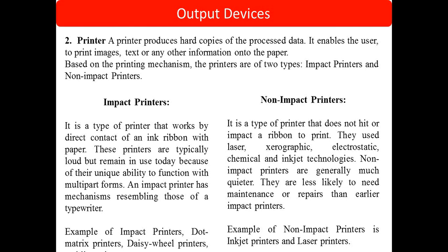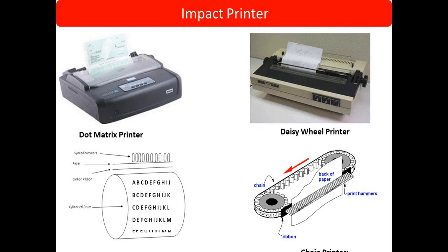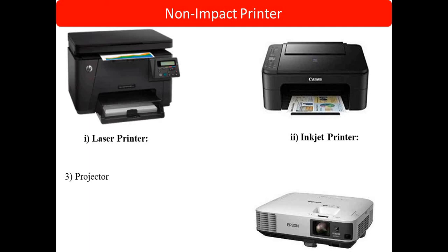Non-impact printers are a type of printer that does not hit or impact a ribbon to print. They use laser, electrostatic, chemical, and inkjet technologies. In non-impact printers, no striker is used — they use laser, electrostatic, chemical, or inkjet technology to print. Examples of non-impact printers are inkjet printers and laser printers. These days, everyone is using non-impact printers because there is no noise and no requirement for direct striking — they simply use laser technology to print.